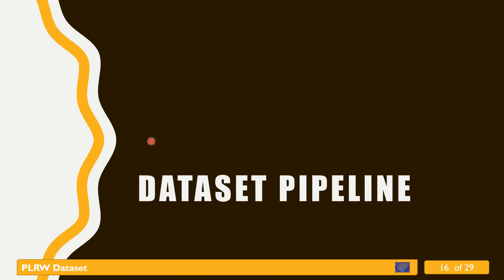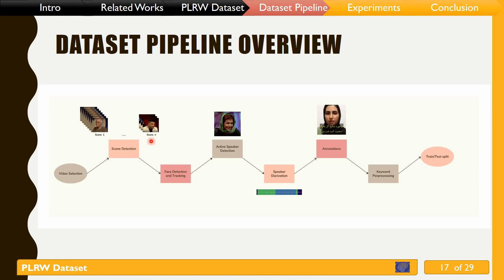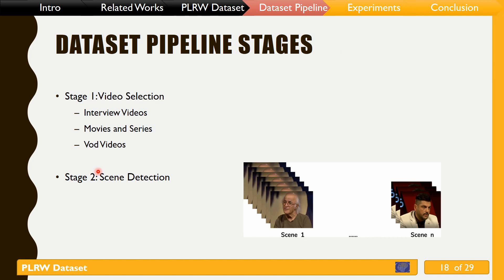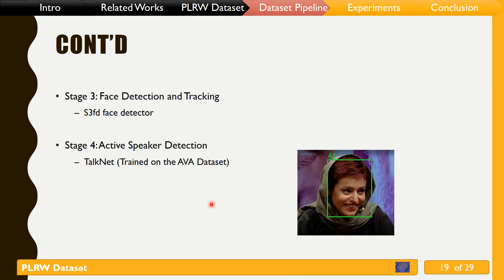In this section I'll describe the pipeline we used to create the dataset from raw videos. Here is an overview of how to build the dataset. First, we must choose raw data — we chose three types of videos: interviews, movies and series, and videos from VOD platforms like Aparat. In the second step, with a video scene detection module, each video is divided into several scenes, and the content of frames does not change much within each scene.